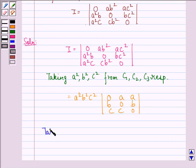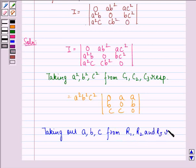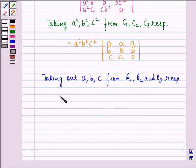So now, taking out a, b, and c from R1, R2, and R3 respectively, we get a²b²c² times abc times the determinant: 0, 1, 1, 1, 0, 1, 1, 1, 0.